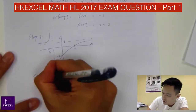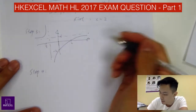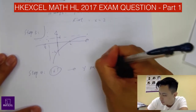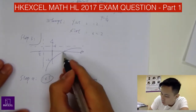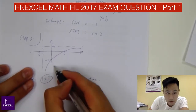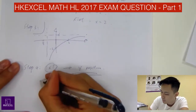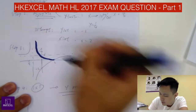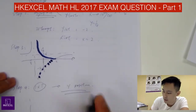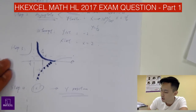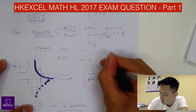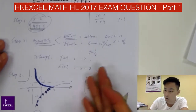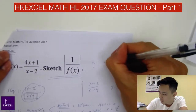Step 4: apply the absolute sign. The absolute sign means all y-values must be positive — there are no negative y-values. The part of the graph that is negative gets flipped up. You then erase the original negative portion, and that gives you the graph of 1/|f(x)|. Don't be afraid of absolute sign questions — they always appear in Paper 1 as 4-mark questions.